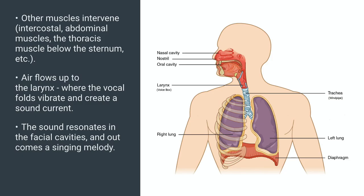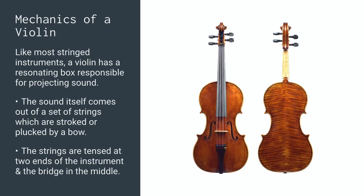Now let's go beyond the human body and look at how we can create sounds through musical instruments. We have roughly a couple of basic types: string instruments, wind instruments, and percussion instruments. In the case of a violin and most string instruments, you have strings that are attached to some kind of a resonating body, and the vibration is created on the string itself.